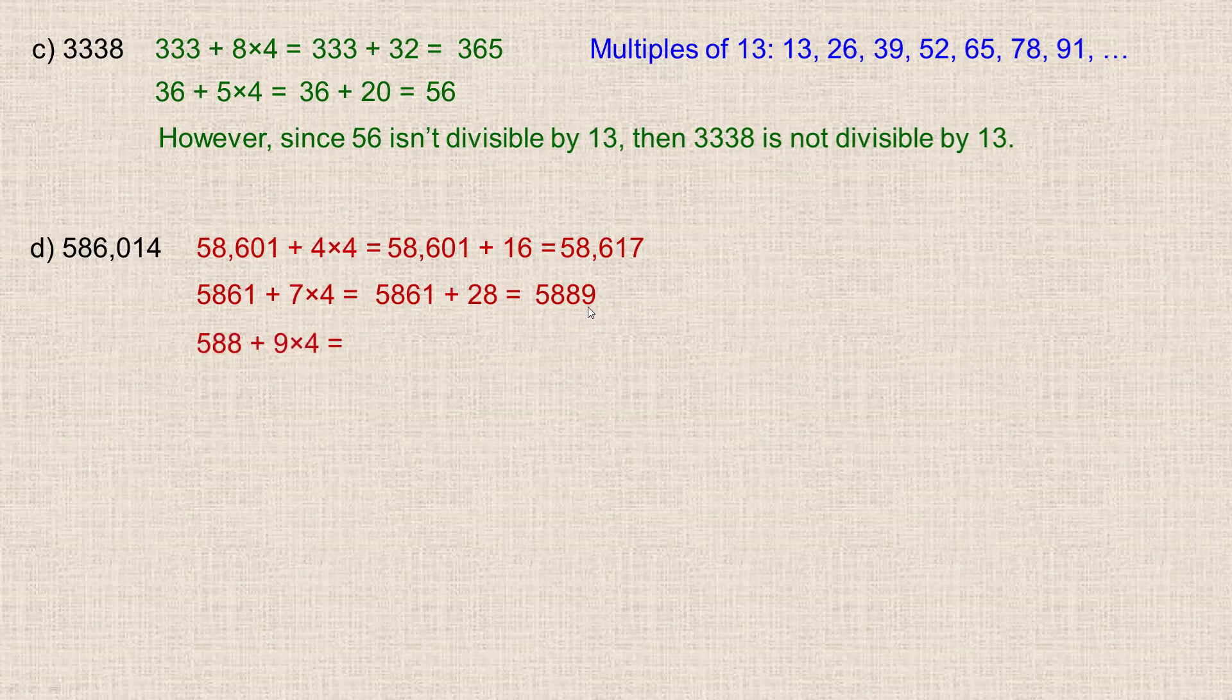So next we would take the 588, and add to it 4 times the 9, which is 36. So if we add those, 580 and 30 is 610, and then we have another 14 here. The 8 and 6 is 14, so it adds to 624. So still a bit too big probably.